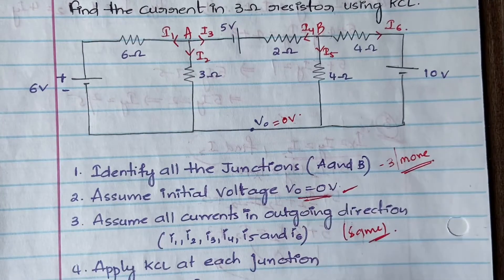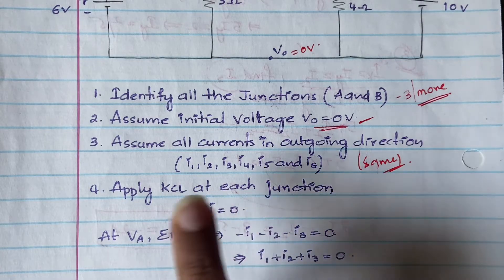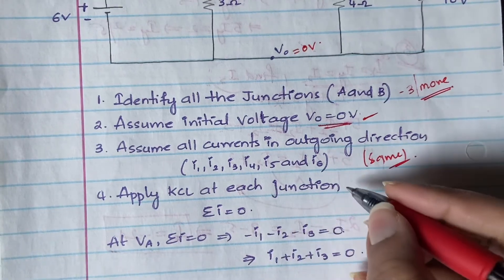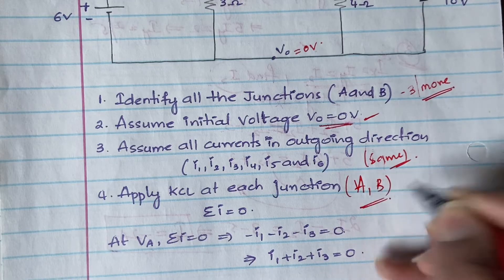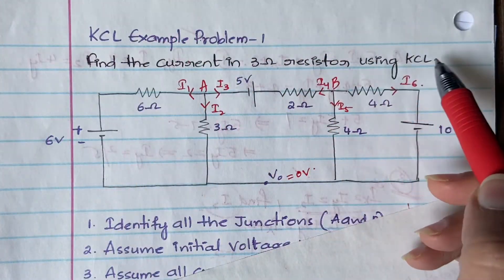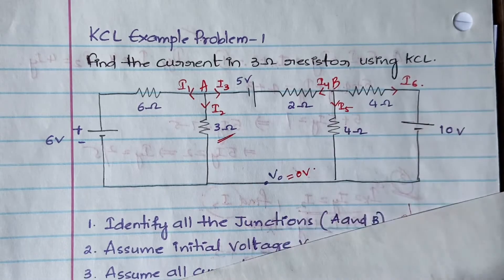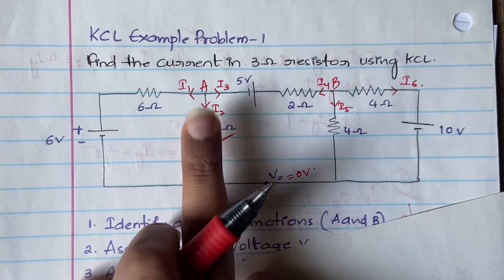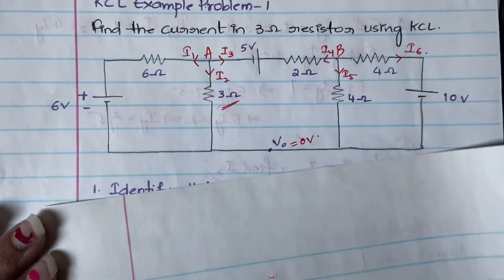Now apply KCL at each junction. KCL says the sum of all currents at a junction is equal to zero. Apply KCL at both Junction A and Junction B. The question is: find the current in the 3-ohm resistor using KCL. The 3-ohm resistor is here, and the current associated with it is i2. So you have to find the value of i2 by forming KCL equations.